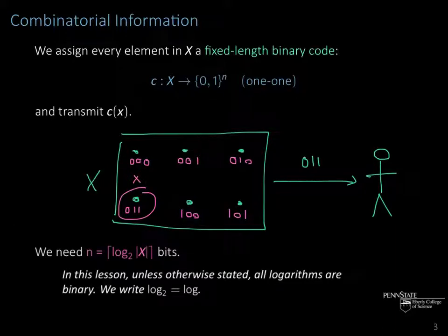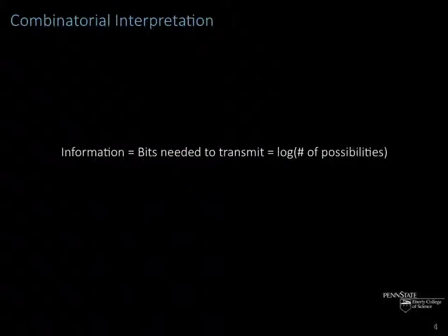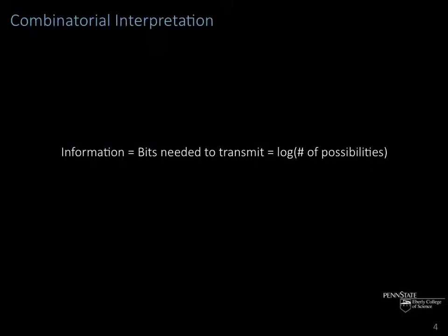How many bits do we need? From this example, it's easy to see we need about log₂|X| bits. Here we have six; the binary logarithm of that rounded up is three bits. In this lesson, unless otherwise stated, all logarithms are binary, so we usually drop the 2 and just write log. The combinatorial interpretation of entropy is simple: the information contained in the set X is just the bits needed to transmit information about an element of X, which is log|X|.